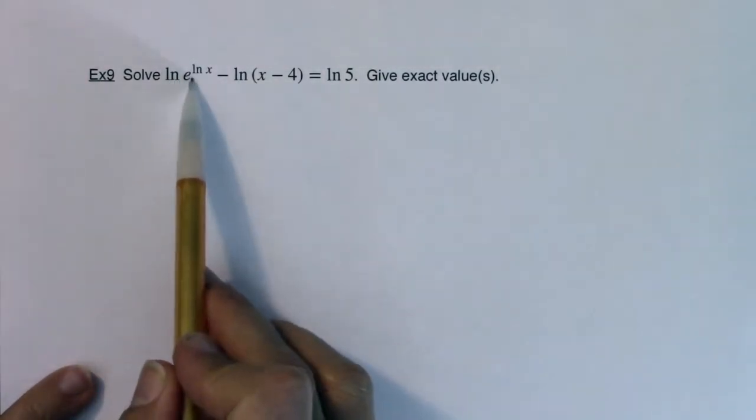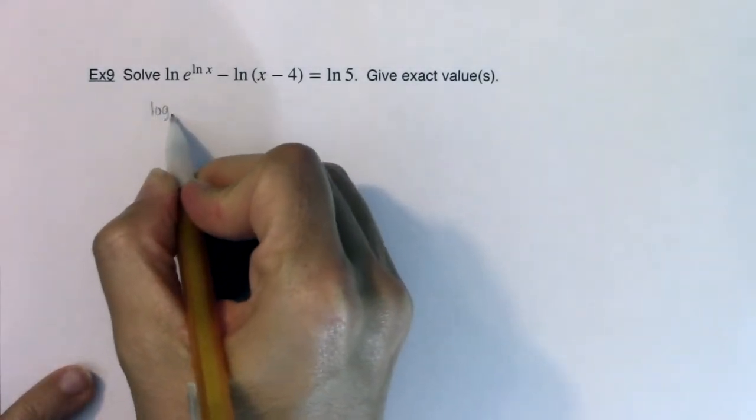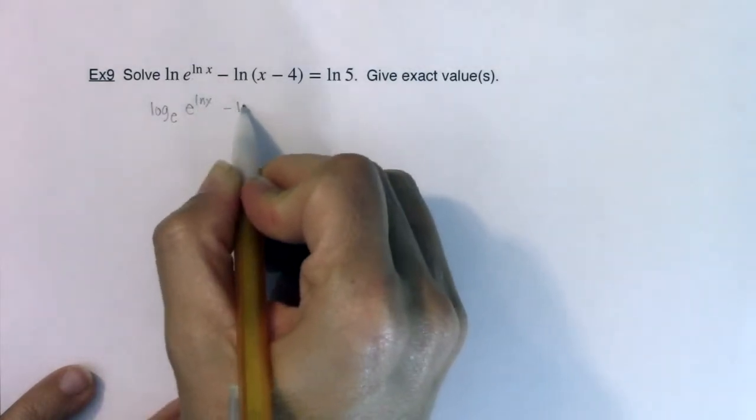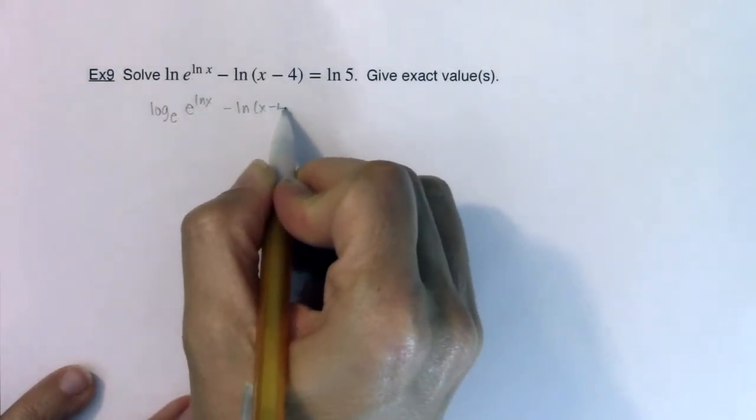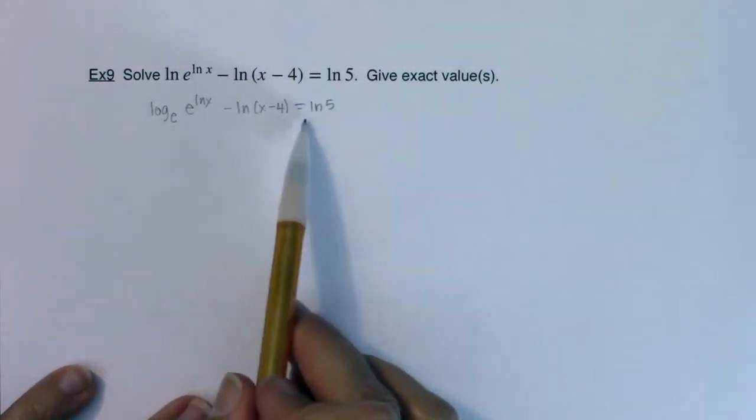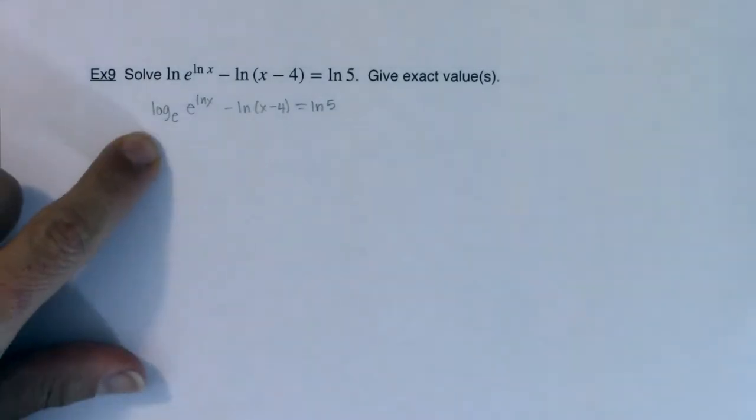I'm hoping the ln and e's are ringing some bells because ln is log base e, and we have e to the ln x here, minus ln of x minus 4 equaling ln of 5. Now you're more than welcome to write these as log base e's, but I want you to see what's happening in this first expression.